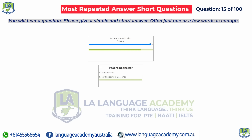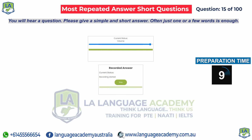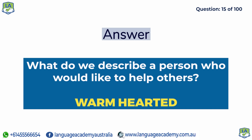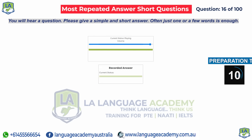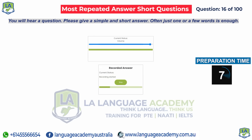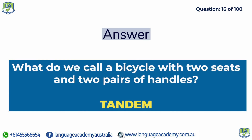What do we describe a person who would like to help others? Warm-hearted. What do we call a bicycle with two seats and two pairs of handles? Tandem.